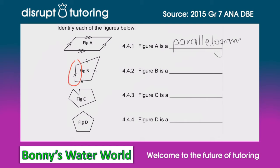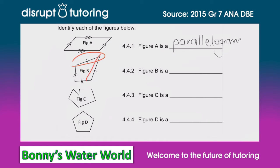Moving on to figure B. We've got a line segment that has markers on it indicating that these two line segments are the same, and another pair of line segments with a marker indicating that that pair is also the same. This means that this type of shape is called a kite — just like you fly.